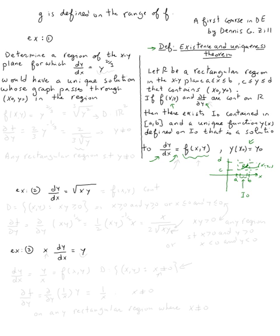Let's do example one. Determine a region of the xy-plane for which dy/dx = y^(2/3) would have a unique solution whose graph passes through point (x₀, y₀) in that region. First, we identify f(x, y) = y^(2/3). We also need to calculate the partial of f with respect to y, which is (2/3)y^(2/3 − 1) = (2/3)y^(−1/3).